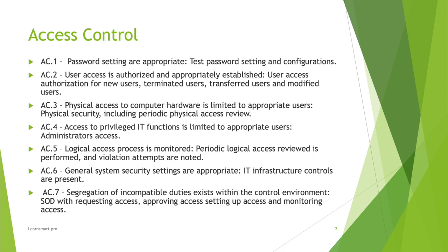The other one is general system security — general system security controls are appropriate. IT infrastructure controls are present. To ensure that the IT infrastructure controls are present, we need the appropriate access for that, to make sure that the individuals who have access to anything security-related in general are limited. The key focus here is to always ensure that when you are testing for access control, the access being permitted is limited and focused only on the appropriateness of that individual and their job function.